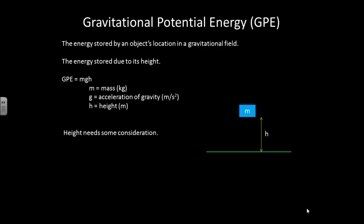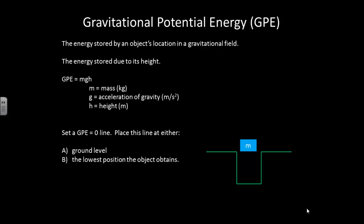Now the height needs a little bit of consideration. So let's consider a mass that is right here on what seems to be a level ground. What is the gravitational potential energy at this point? Well, let's say that that actually is a hole. Now our gravitational potential energy is changed. The bottom line is that you need to set a gravitational potential energy equals zero line, a place where you're going to consider the height to be zero.